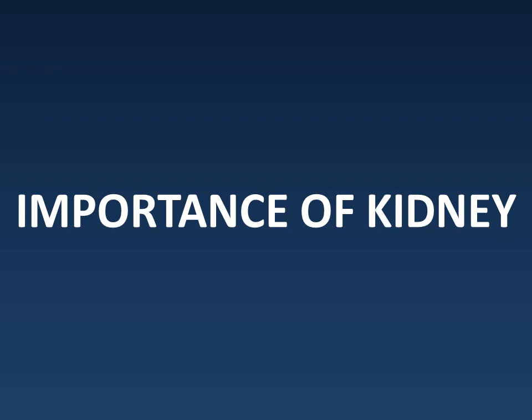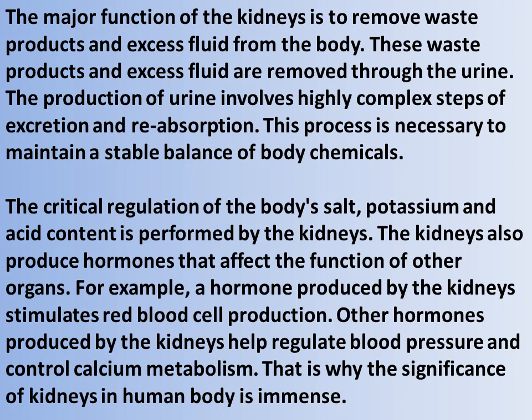The major function of the kidneys is to remove waste products and excess fluid from the body through urine. The production of urine involves highly complex steps of excretion and reabsorption, which is necessary to maintain a stable balance of body chemicals. The critical regulation of the body's salt, potassium, and acid content is performed by the kidneys. The kidneys also produce hormones that affect the function of other organs — for example, a hormone produced by the kidneys stimulates red blood cell production. Other hormones help regulate blood pressure and control calcium metabolism. That is why the significance of the kidneys in the human body is immense.